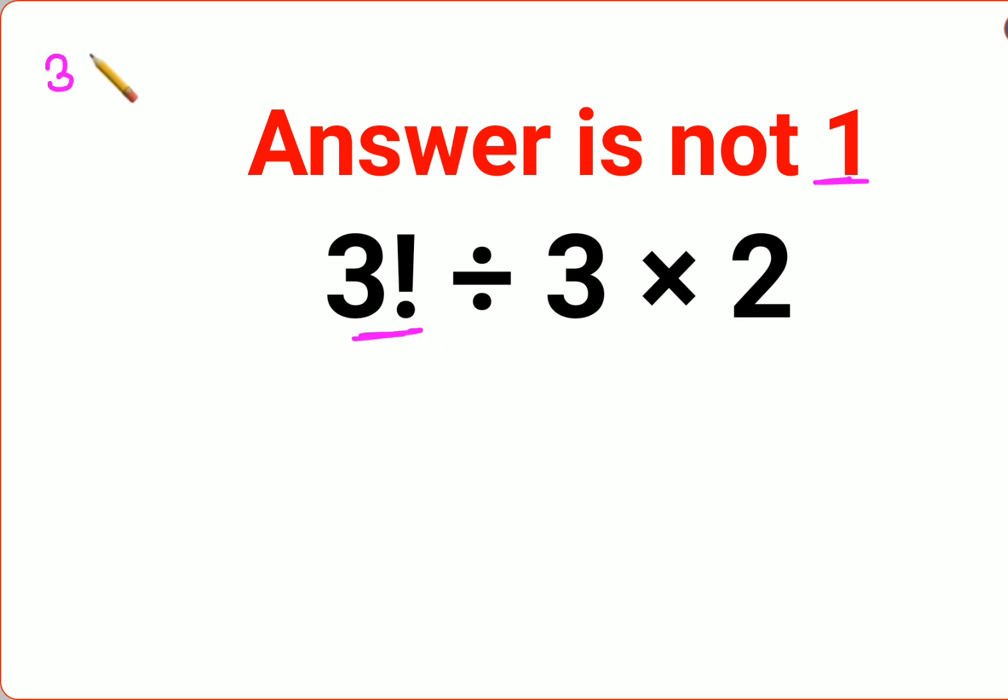That means we're trying to find 3 factorial. Please understand, factorial is nothing but the product of that number multiplied to the next consecutive number in decreasing order until you reach the value of 1.